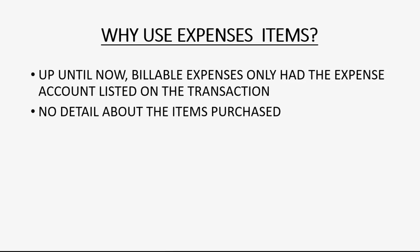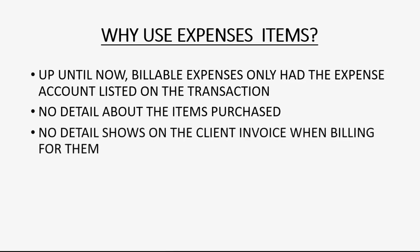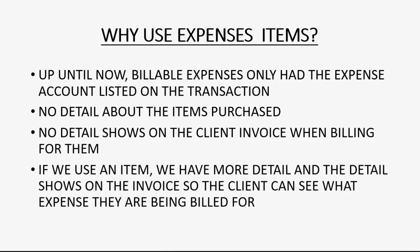There was no detail about the items purchased or what you're actually billing the client. At the moment you put it on an invoice, there is no detail that shows on the invoice — like what item it was and what quantity and so on. So if we use an item instead of just using the expense account that we're billing for, then we'll have more detail, and that detail shows on the invoice so the client can see what expense they are being billed for.